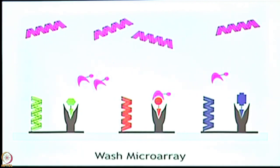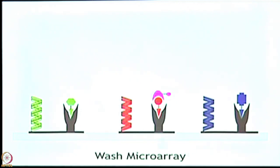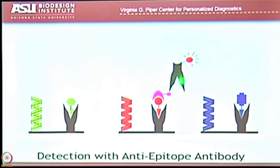Over time, the query protein will bind to the target proteins if it recognizes them. In this case, it binds to this one but not the others. I can wash away anything that's not bound, and I'm left with this one bound to that spot. I know the identity of every spot on the array — whatever position it is, which gene it is — so I know if this spot lights up, that pink binds to red. I can detect that interaction with an antibody with a fluorescent marker that will recognize either a tag on the pink protein or the pink protein itself.